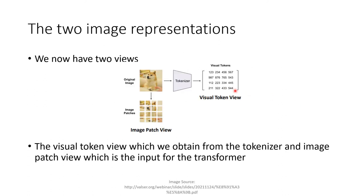So now we have two different image representations. One is our visual token view, which we generate using our tokenizer, and the other is our patch view. The patch view is an equal division of the image into N number of patches. For example, if our image is 224x224 pixels, we can divide it into 14x14 patches, each patch having 16x16 pixels.